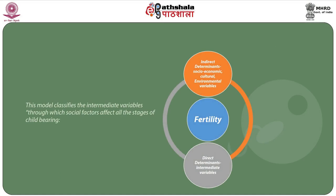The model that Davis and Blake developed was as follows. There are indirect determinants such as socio-economic, cultural and environmental variables. There are also direct determinants — intermediate variables — which affect fertility. This model classifies the intermediate variables through which social factors affect all the stages of childbearing.